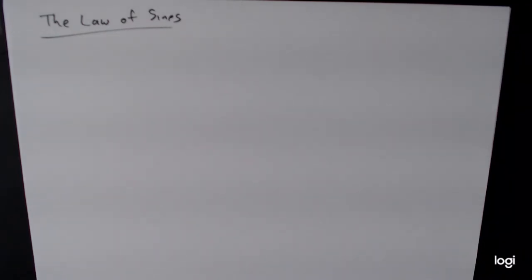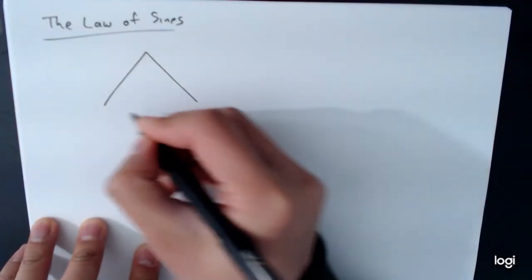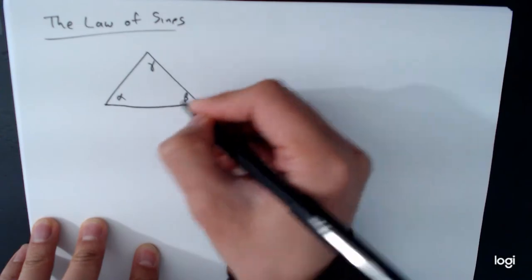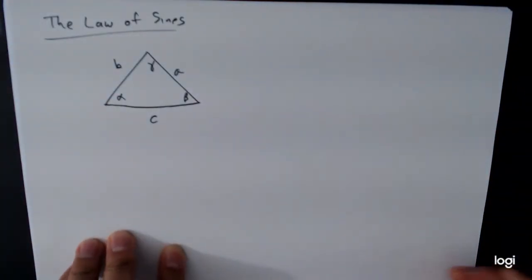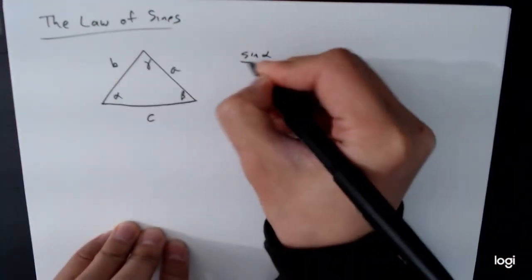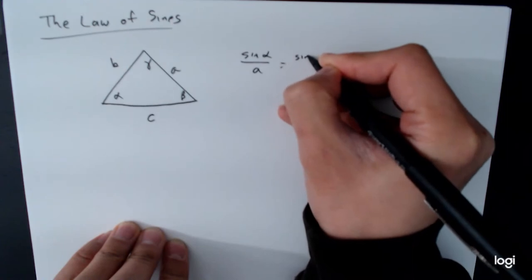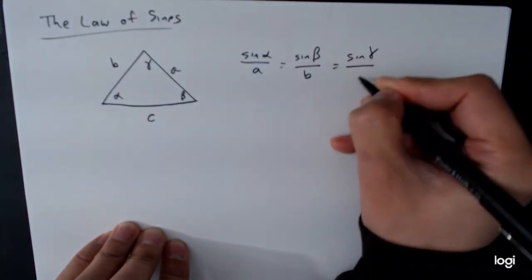Now the law of sines is a relationship between the sides and the angles of a triangle. So what we're going to do is draw a generic triangle. Remember, an oblique triangle, not necessarily a right triangle. We'll label the sides a, b, and c, and the angles alpha, beta, gamma. And so the relationship we have is that sine of alpha over a equals sine of beta over b, which equals sine of gamma over c.